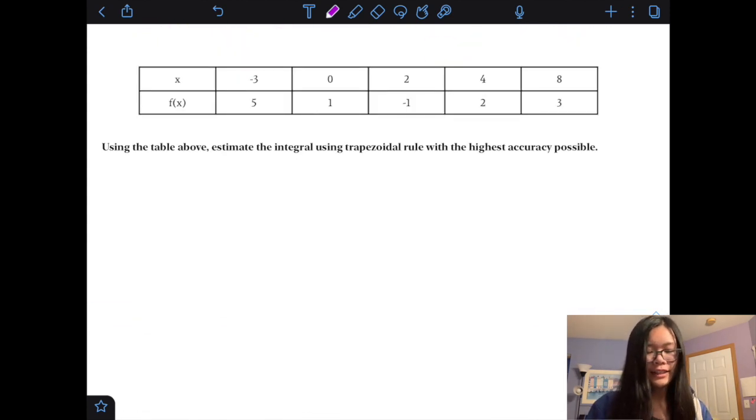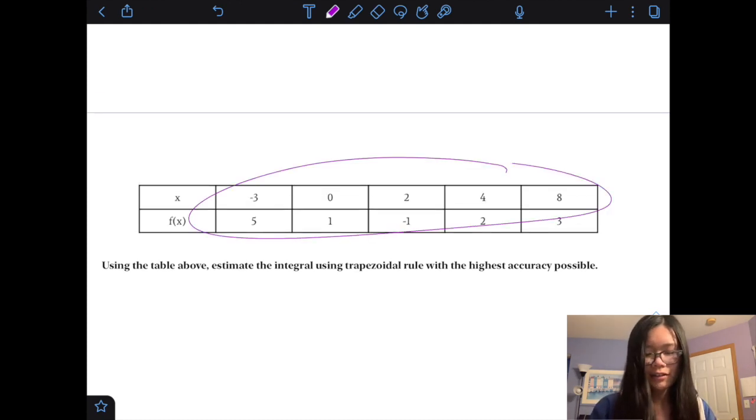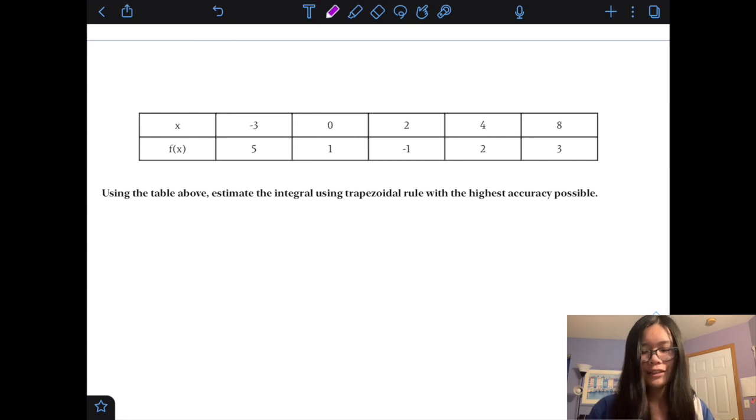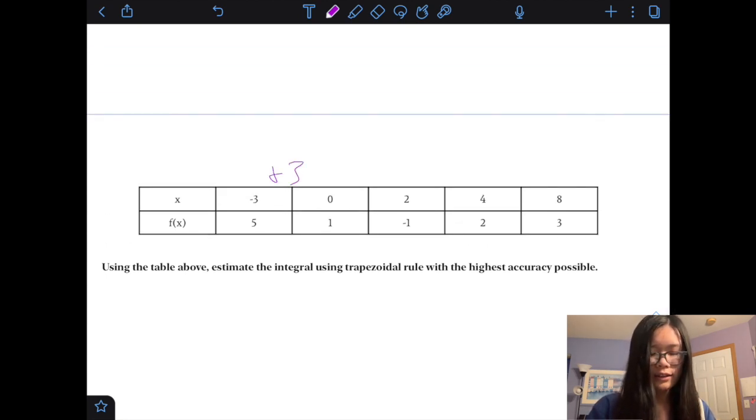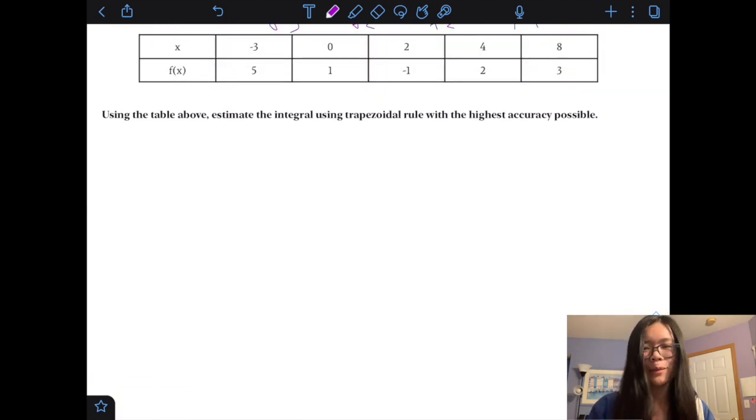We just have a table, using the table above, estimate the integral using trapezoidal rule at the highest accuracy possible, well, we want to use as many subintervals as possible, so, we want to use all of the values, however, the issue here is, well, these don't have a consistent height, as you can see here, difference is 3, difference is 2, difference is 2, difference is 2, difference is 4, what do we do, we can't use the fancy, the fancy rule that we just learned, well, sometimes they'll tell you to use trapezoidal rule, even if you can't use trapezoidal rule, if that makes sense, sometimes it'll just be like that, because they just want to make things harder for you, don't ask me why, I'm just a student too.